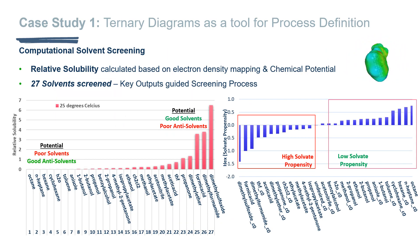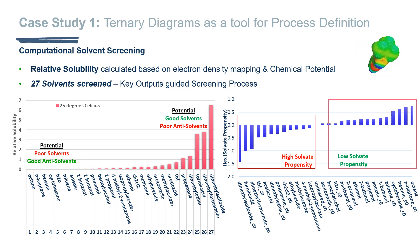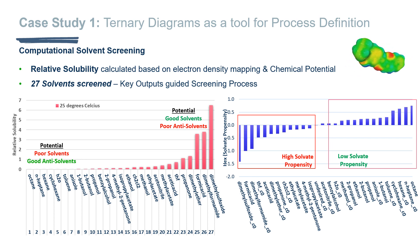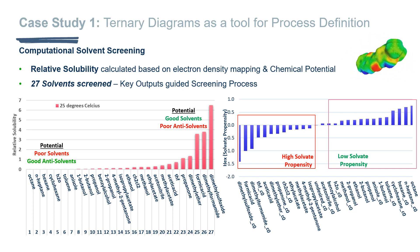Shown below is data from one such computational screen using both COSMO-RS and DynaGen, where 27 potential solvents were assessed and ranked by relative solubility of the desired enantiomeric compound. This helps identify good solvents — in this case DMF and DMSO — or potential anti-solvents such as water or alkanes. The graph on the right shows solvents with a high propensity to form a solvate; for example, THF and formic acid were removed from any subsequent experimental screen due to their solvate-forming propensity.